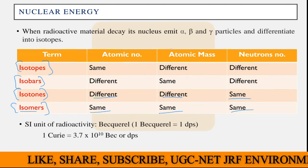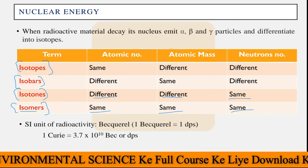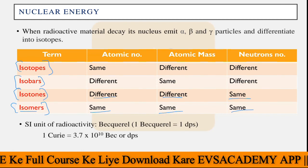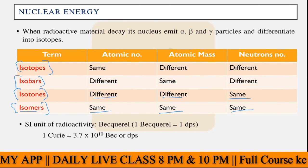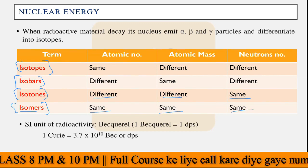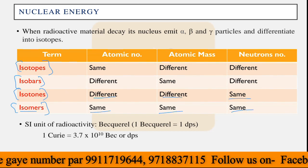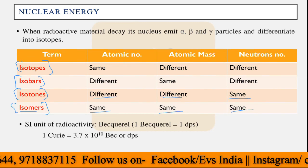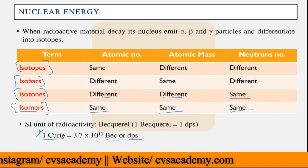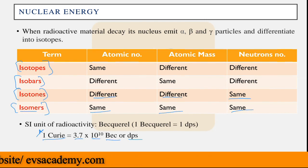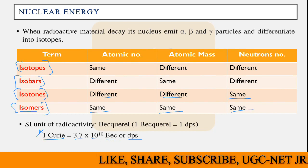Moving to the SI unit of radioactivity: the SI unit is the becquerel. One becquerel equals one decay per second — if one atom decays per second, the radioactivity is one becquerel. In honor of Madame Curie, another unit was created called the curie. One curie equals 3.7 multiplied by 10 to the power 10 becquerels. The curie is not an SI unit but is important to remember: one curie equals 3.7 × 10^10 becquerels.